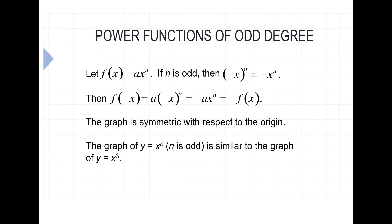With odd degrees, we see the opposite. For odd n, any negative number raised to the nth power results in the opposite sign — the negative x to the n changes the sign. Odd functions are symmetric with respect to the origin. The graph of y = x to the n for odd n is similar to y = x cubed. There are many similarities, but slight differences between them as well.